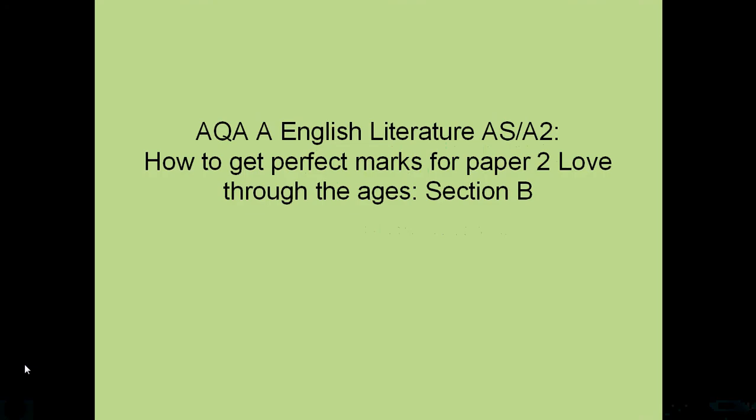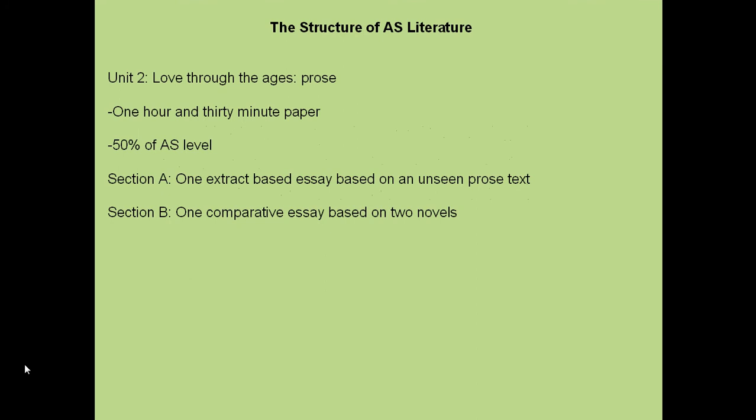Hello everyone. In this video we're going to explore how you can achieve perfect marks for Section B of Paper 2 of the AQA English Literature AS examination. A reminder of the structure of this paper: it's one and a half hours in length, it's 50% of your total AS, and there are two sections. We've already explored Section A in previous videos, so please feel free to go back and find those.